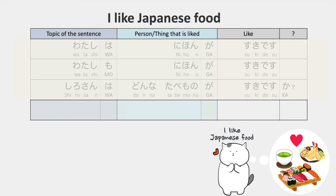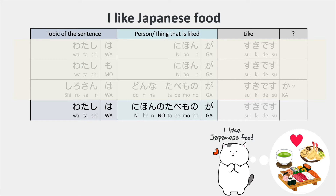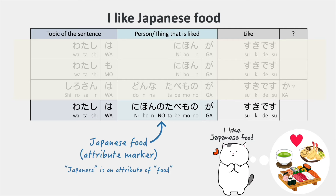I like Japanese food. Watashi wa Nihon no tabemono ga suki desu. The function of this no particle is as an attribute marker, which we also reviewed in the first video in this series. Japanese is an attribute of food. Japanese food is Nihon no tabemono. American food is Amerika no tabemono.